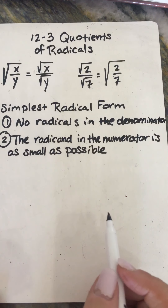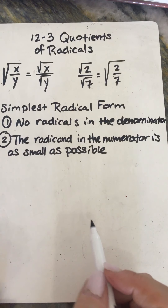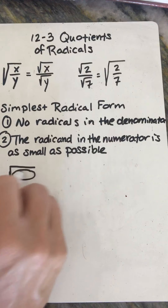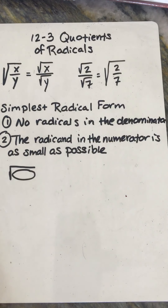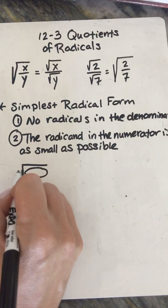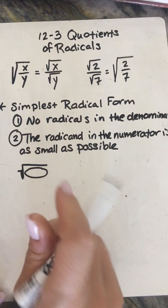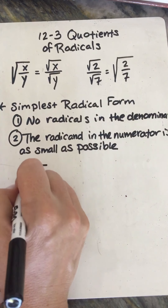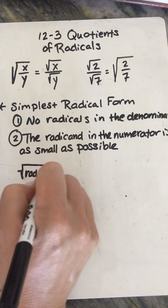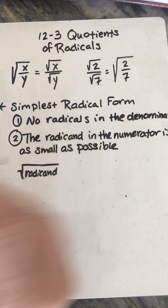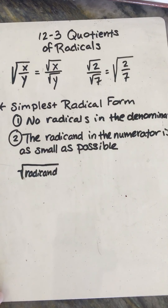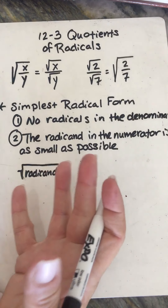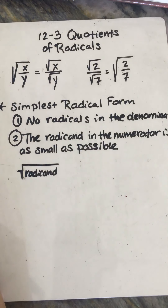You might be thinking, 'I don't remember radicand.' The radicand is this number right here — if you have your square root, your radicand is the number inside it. That number needs to be as small as possible, so any perfect squares you've got to pull out.